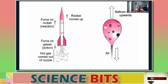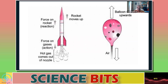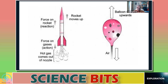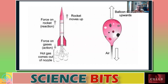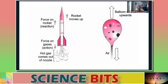So the same thing happens in the rocket. Inside the rocket, there is fuel. When you burn that fuel, hot expanding gas comes out — like the air comes out of the balloon. When the hot gas comes out of the nozzle on one side, the rocket moves forward. So it's the same principle.